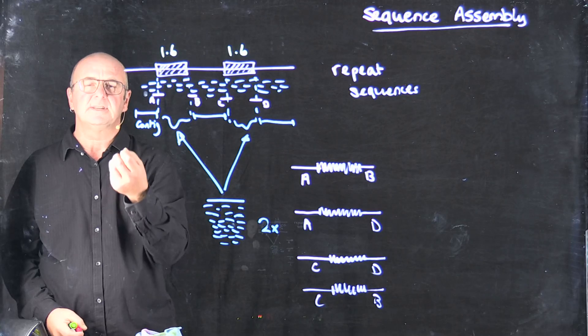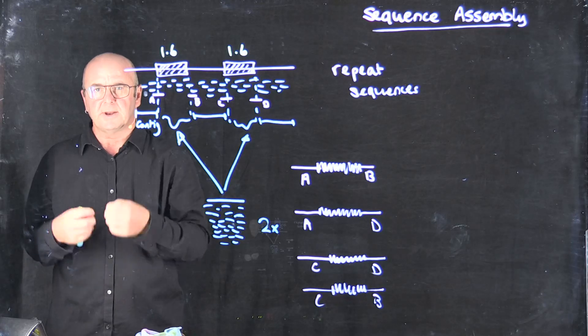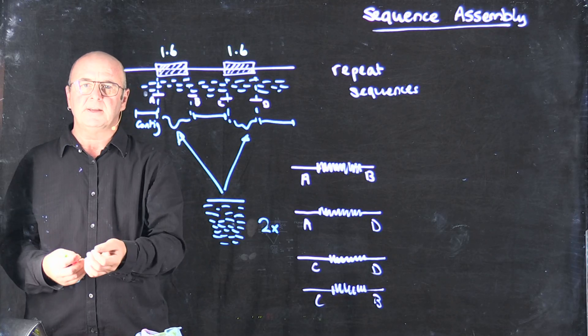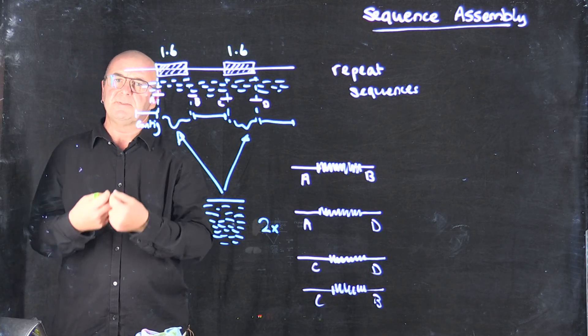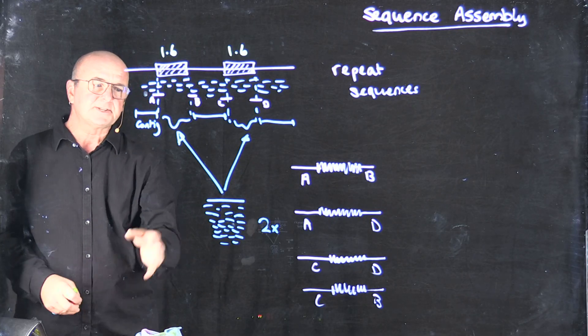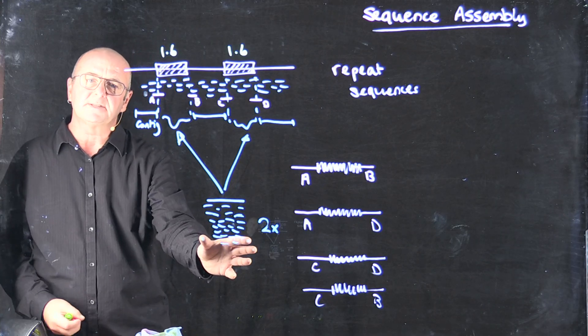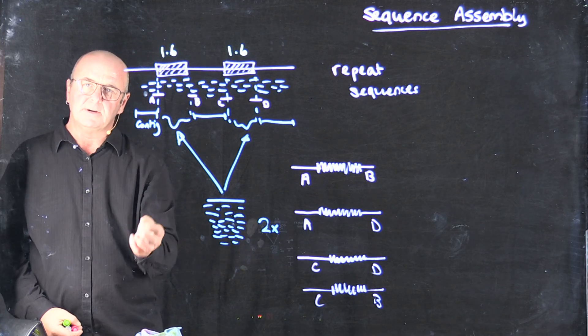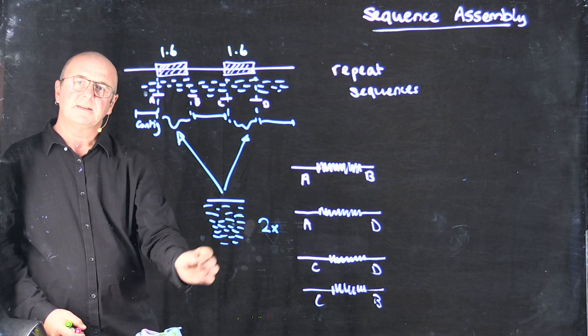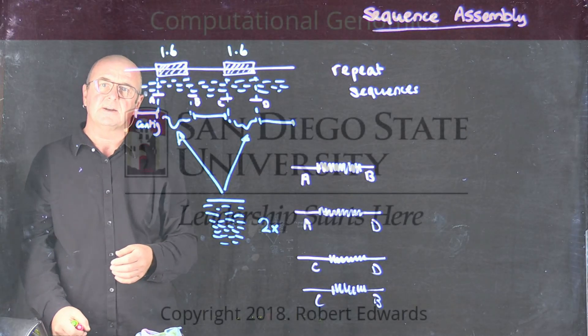And so of course, with some of the newer technology that's come along, so the PacBio technology, the nanopore technology especially, where we're getting 40, 50 kilobase reads as a routine output, we solve this problem of trying to understand repeats. And so the new technology's a real bonus for us in trying to close genomes down to a single circle, something that we can't do with the shorter read technology.